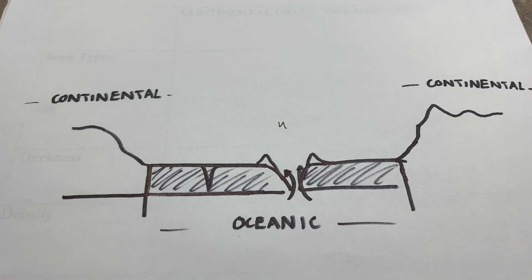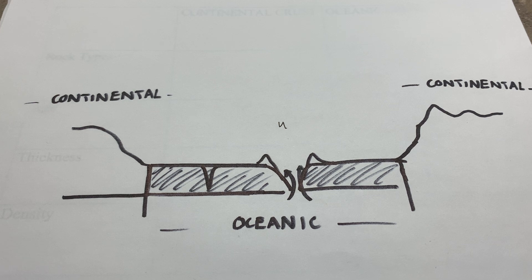Because the ocean covers much more of the Earth's surface — if you've ever looked at the Earth from space or satellite photographs, the Earth is mostly blue — oceanic crust makes up a majority of the Earth's crust. And there are a couple of key differences I'd like to highlight between these two.